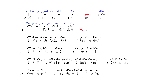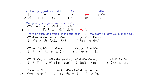Sentence number 22: I have an exam at four o'clock in the afternoon. We have the blank. After the exam, I'll give you a phone call. To fill this blank, we have letter F, 'yǐhòu', meaning 'after'. After the exam, I'll give you a phone call — 'yǐhòu gěi nǐ dǎ diànhuà.' Correct answer is letter F.